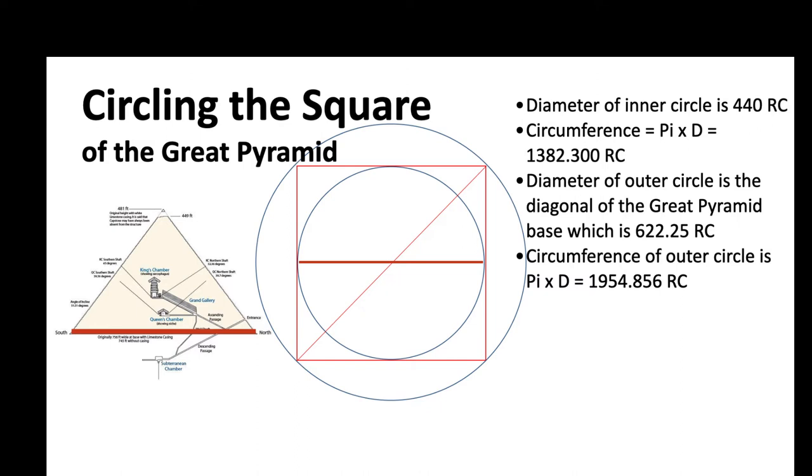We've got two circles now - circling the square with an inscribed circle and an exoscribed circle around the Great Pyramid. The circumference of the outer circle is 1,954 royal cubits.